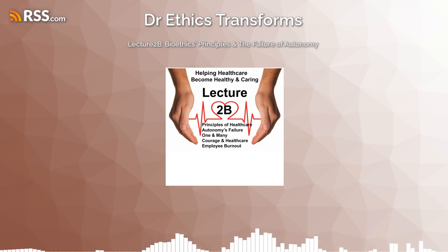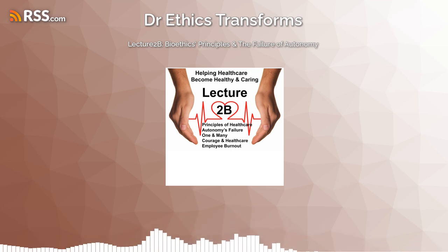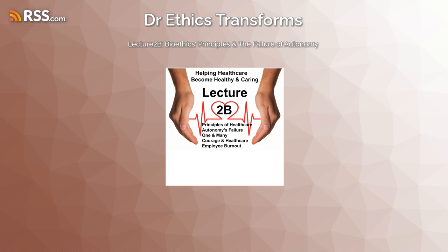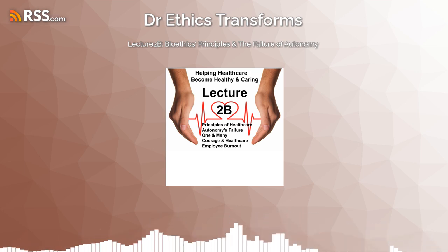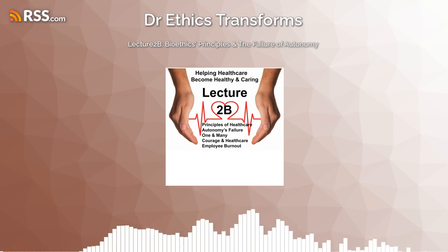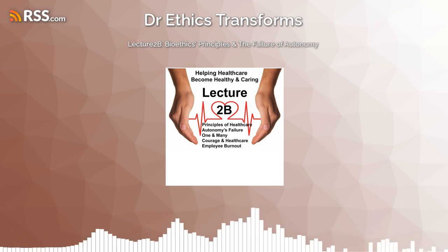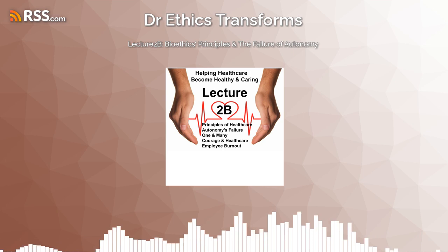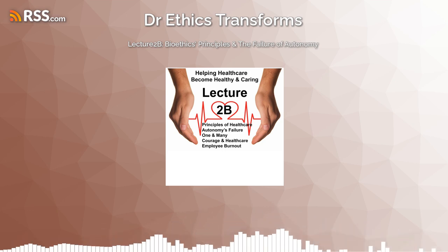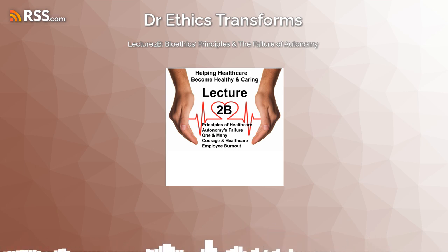The text introduces us to four principles. In chapter 4 it talks about autonomy, in chapter 5 non-maleficence, chapter 6 is on beneficence, and chapter 7 is justice. These four principles, called the mantra of health care education, are essential to understanding bioethics as it is currently constructed. We need to now ask the question: how do we define these principles?